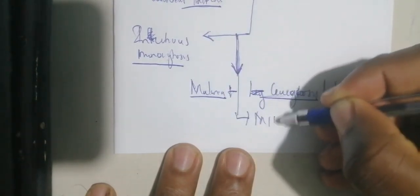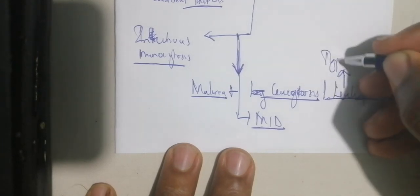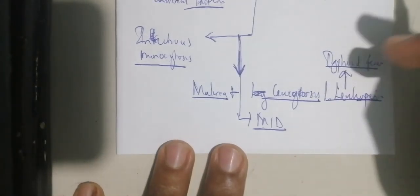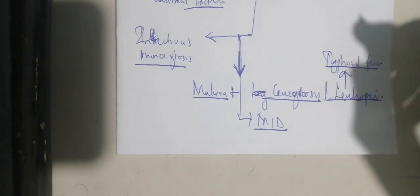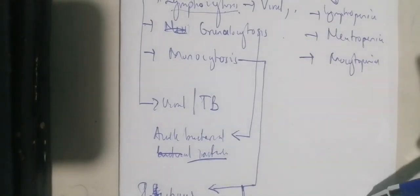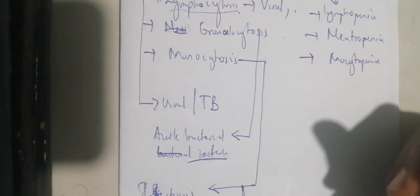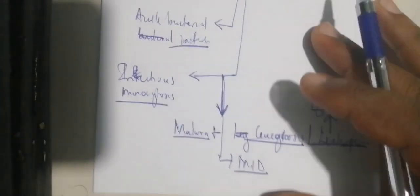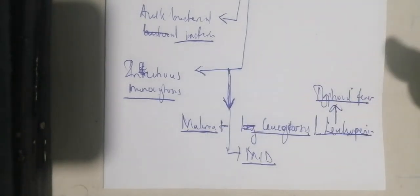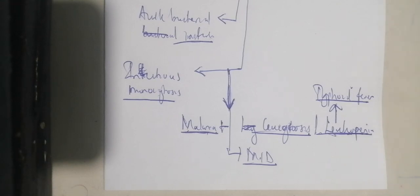Generally malaria does not have leukocytosis; it instead has leukopenia. When there is leukopenia, the major cell involved to suggest malaria is the monocyte (MID). There may be a normal white blood cell count or leukopenia in cases of malaria. Similarly, in cases of typhoid fever, there is leukopenia and it is the lymphocytes that are elevated.